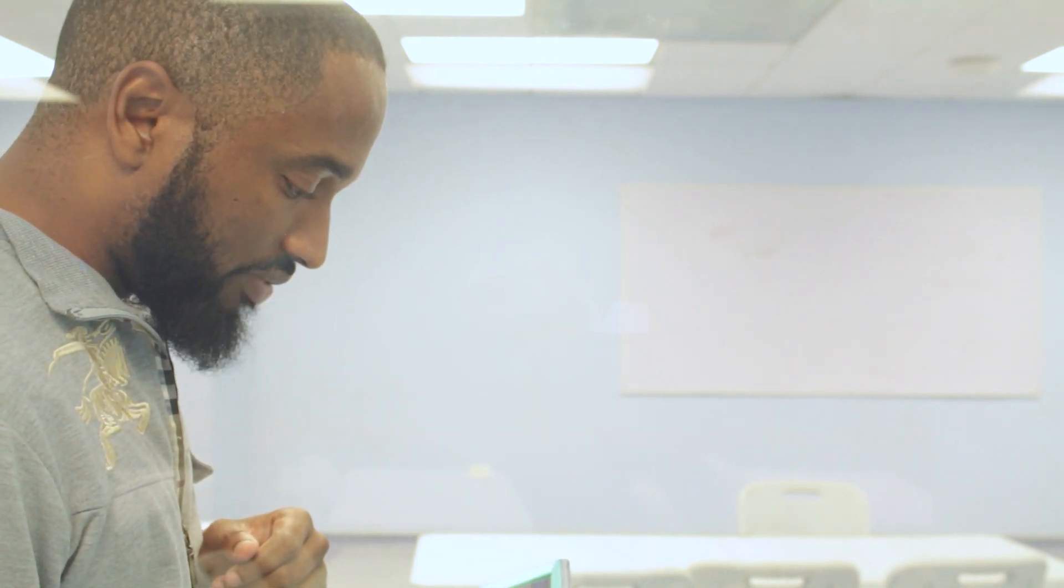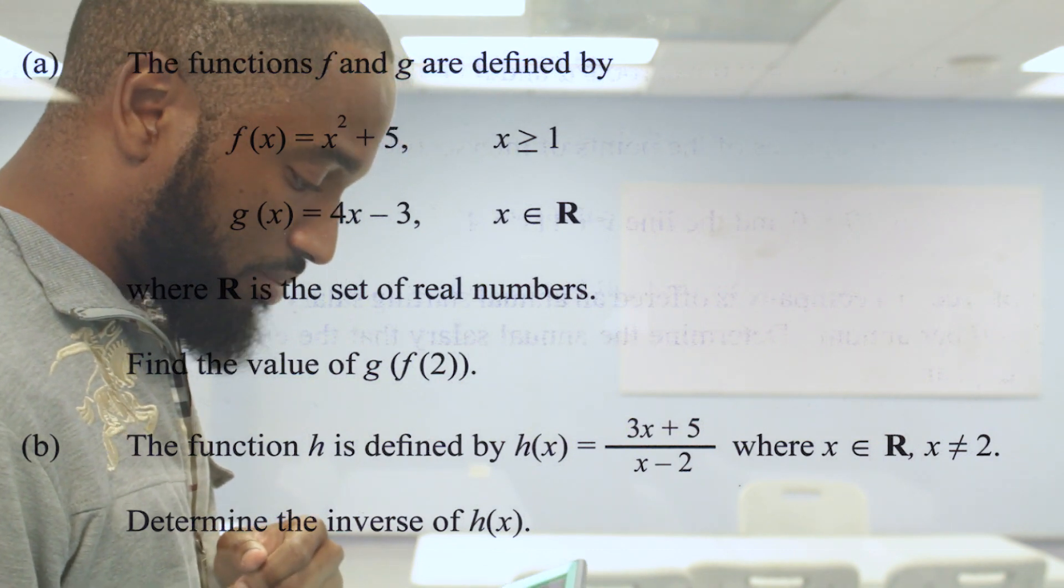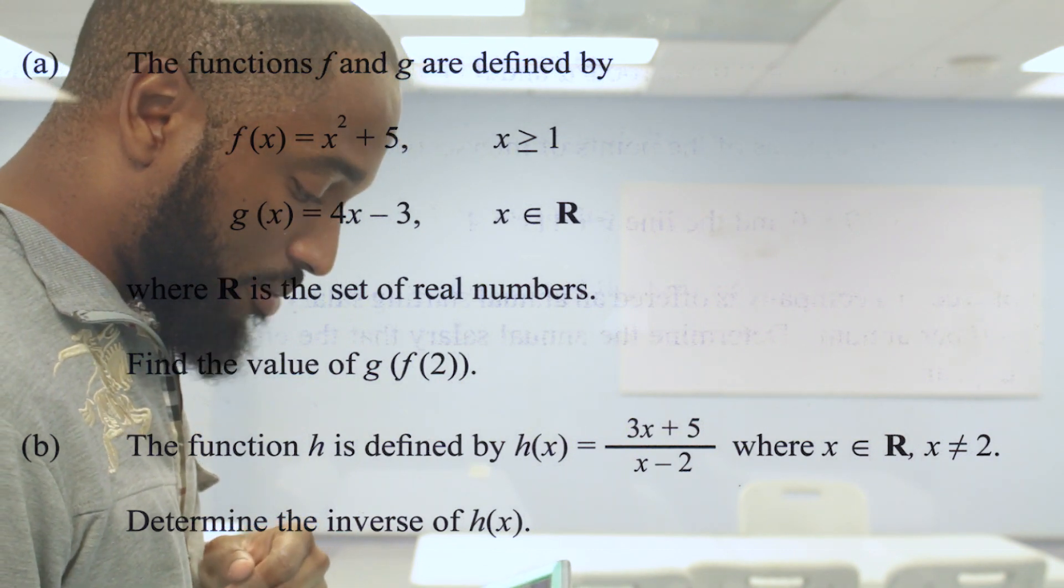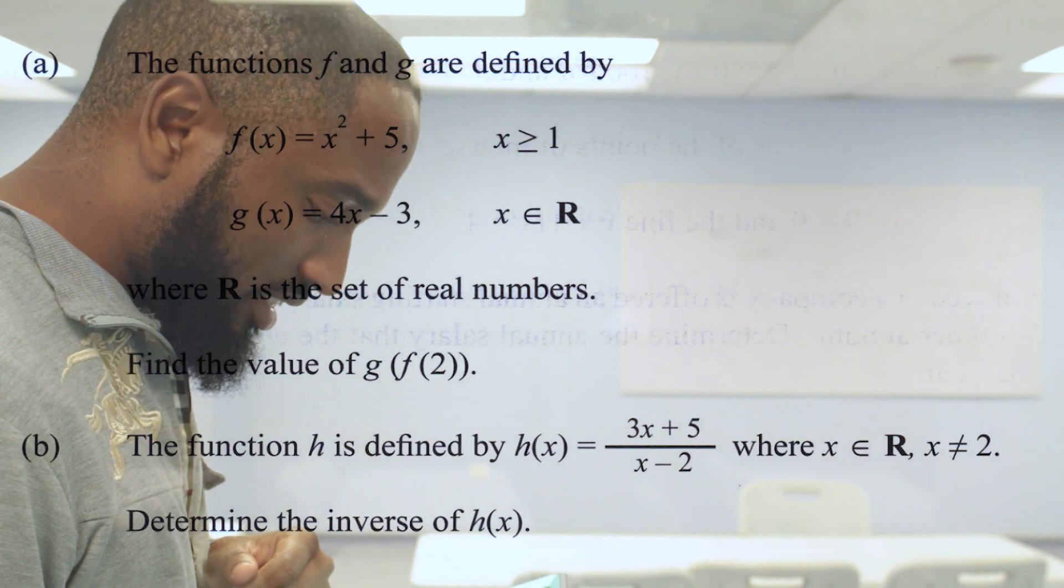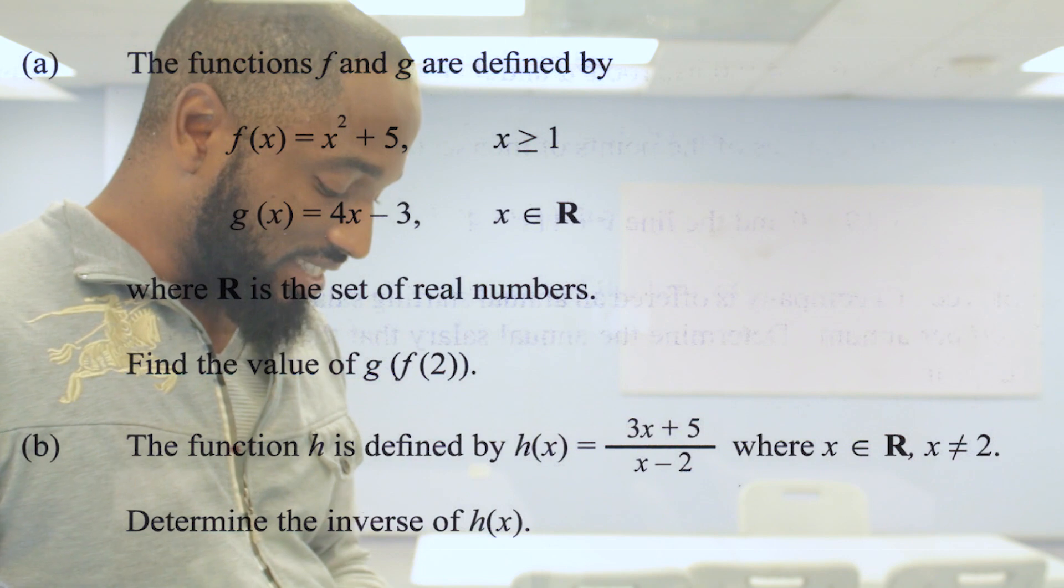So here's the question from 2015 June. The functions f and g are defined by f of x is x squared plus 5, g of x is 4x minus 3. We ask to find the value of a composite function and then to determine the inverse. So I'm leaving this one in your hands. No hints provided. And yes, I will try to remember to put a solution to these questions in the next AdMaths video that I do.